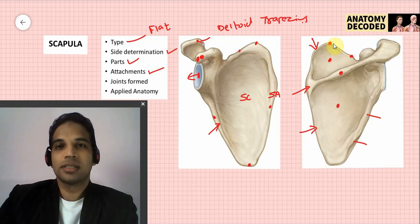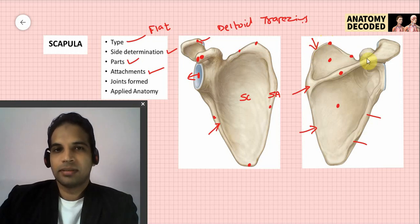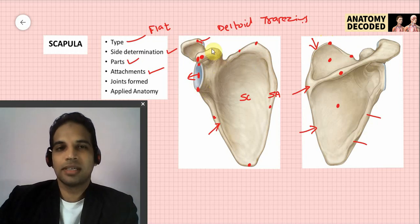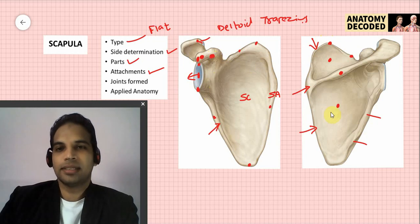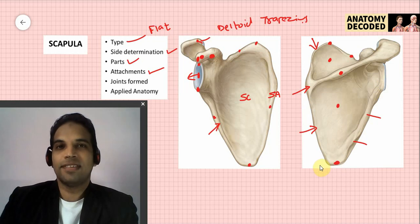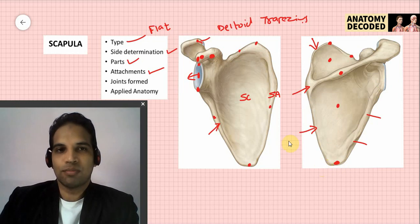Levator scapulae attaches along the medial border with some slips towards the superior angle. The omohyoid muscle attaches along the superior border. Along the glenoid cavity: the supraglenoid tubercle gives attachment to the long head of biceps, and the infraglenoid tubercle gives attachment to the long head of triceps. Pectoralis minor attaches to the medial aspect of the coracoid process, and latissimus dorsi to the inferior angle.